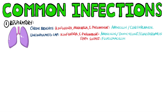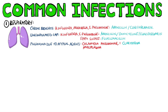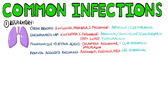Flucloxacillin should be added if staphylococci are suspected. If atypical pathogens such as chlamydia or mycoplasma are suspected, clarithromycin can be used. In hospital-acquired pneumonia we need to cover pseudomonas, MRSA, and klebsiella. Options include co-amoxiclav or cefuroxime if within five days of admission. After five days, options include piperacillin-tazobactam, a broad-spectrum cephalosporin like ceftazidime, or a quinolone such as ciprofloxacin, with vancomycin if MRSA coverage is necessary.